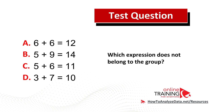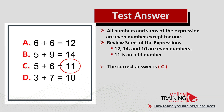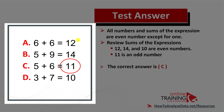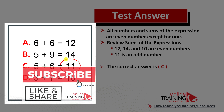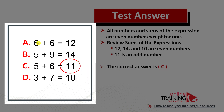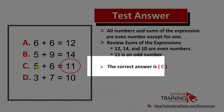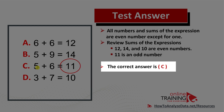Did you come up with the answer? Let me show you two ways to solve this challenge. First, let's look at the right side of the expression. You see that 12, 14, and 10 are all even numbers, and 11 is the odd number — so that should give you some clues. If you look at the left side, 6 plus 6 is a combination of even numbers, and 5 plus 9 and 3 plus 7 are combinations of odd numbers. Expression C stands out because it has a combination of odd and even numbers, so the correct answer is choice C.